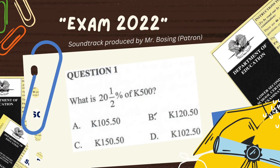In the 2022 exam, question number one, the question is asking us to find 20.5% of 500 Kina. Although the question may look simple, the tricky part that fails students is the expression of the percentage in either fraction or decimal.